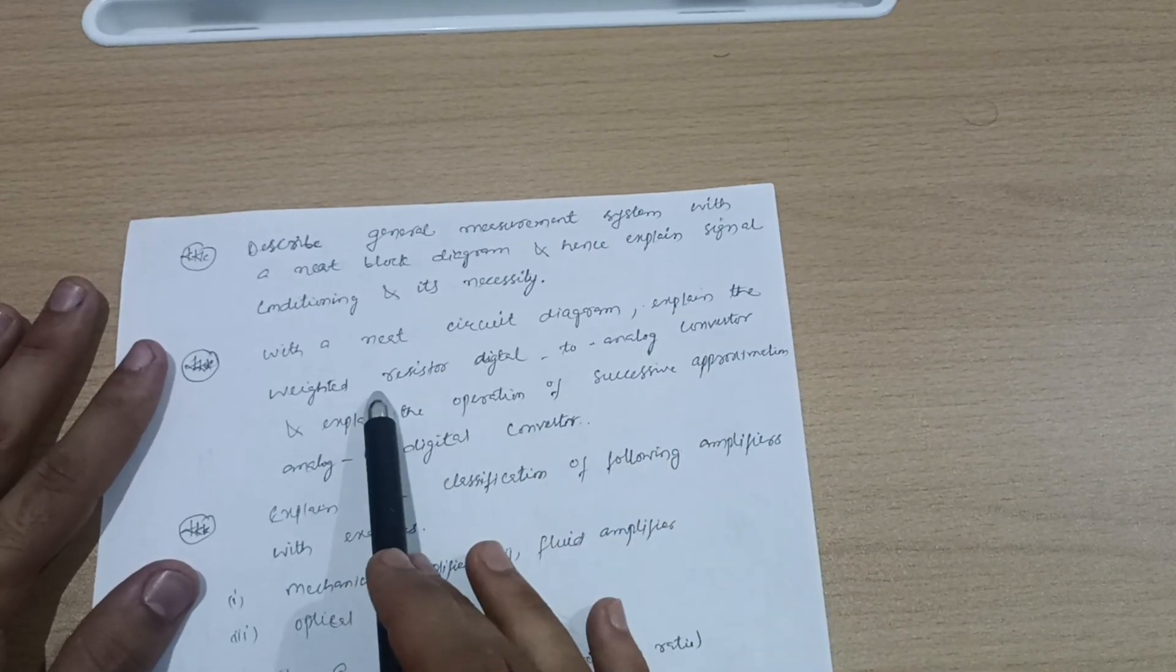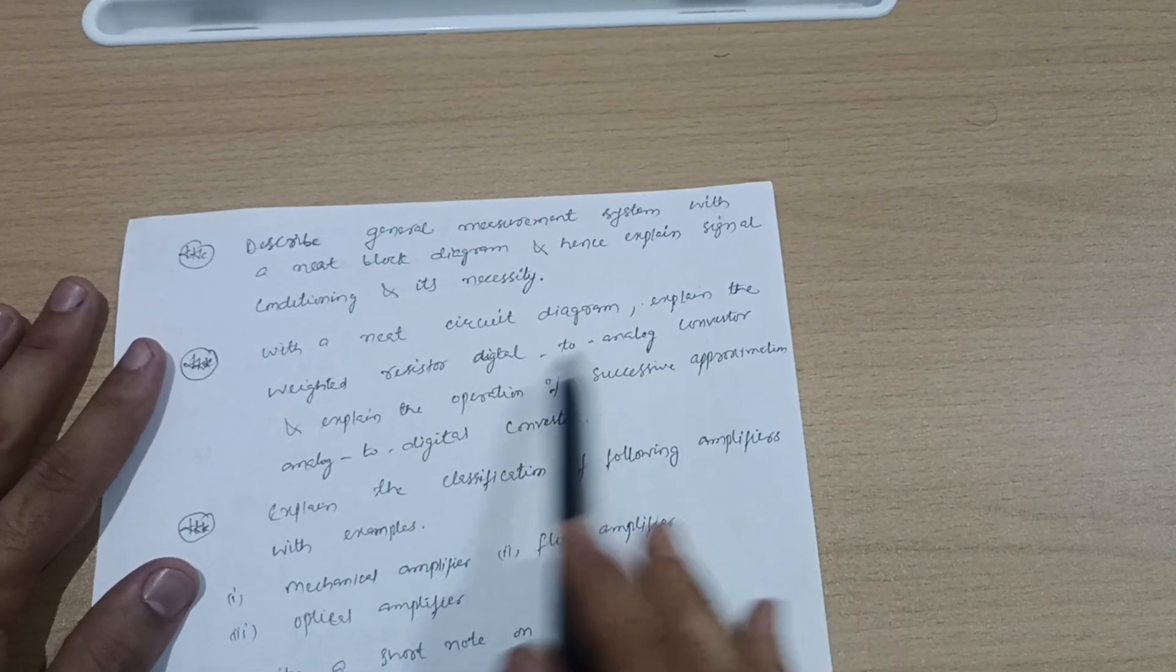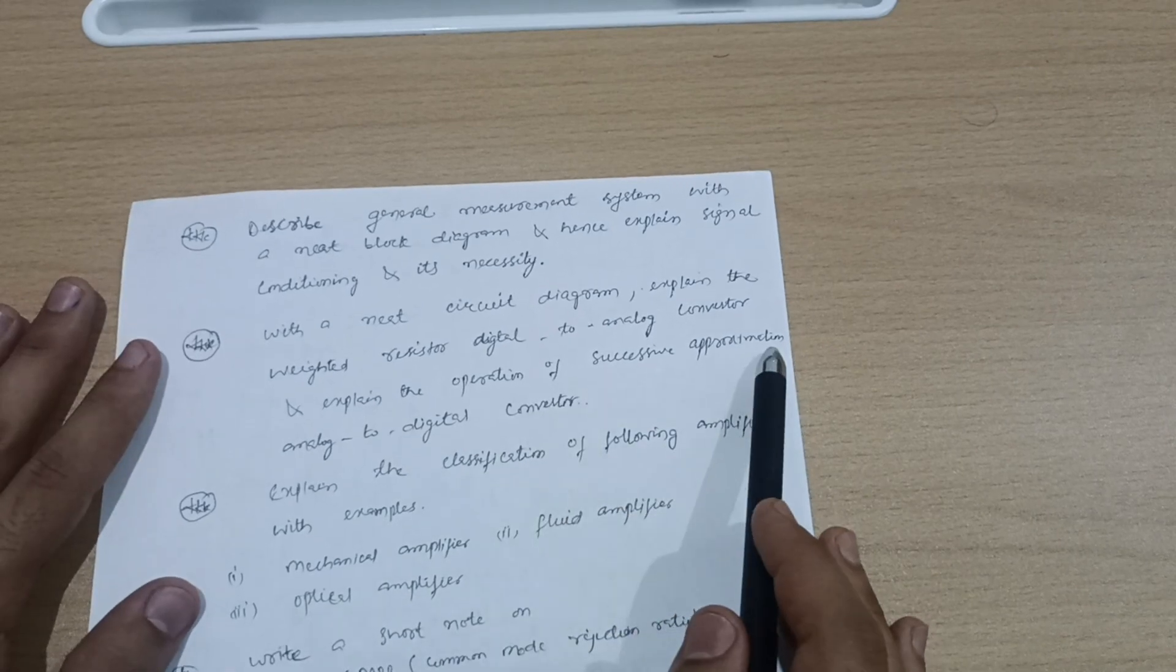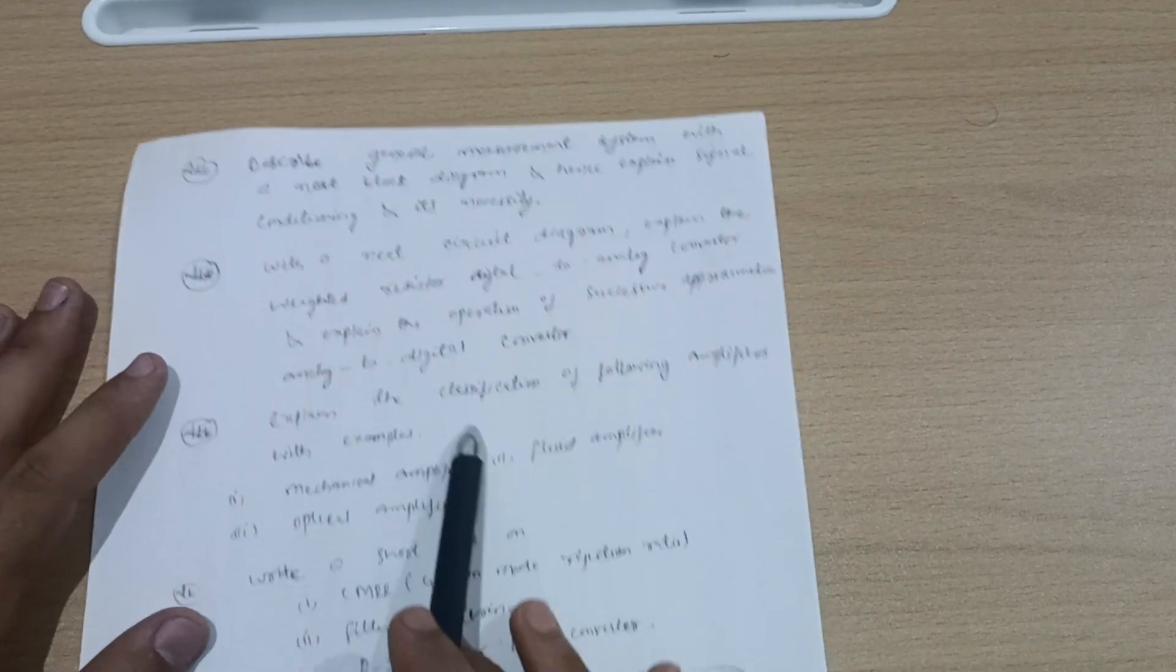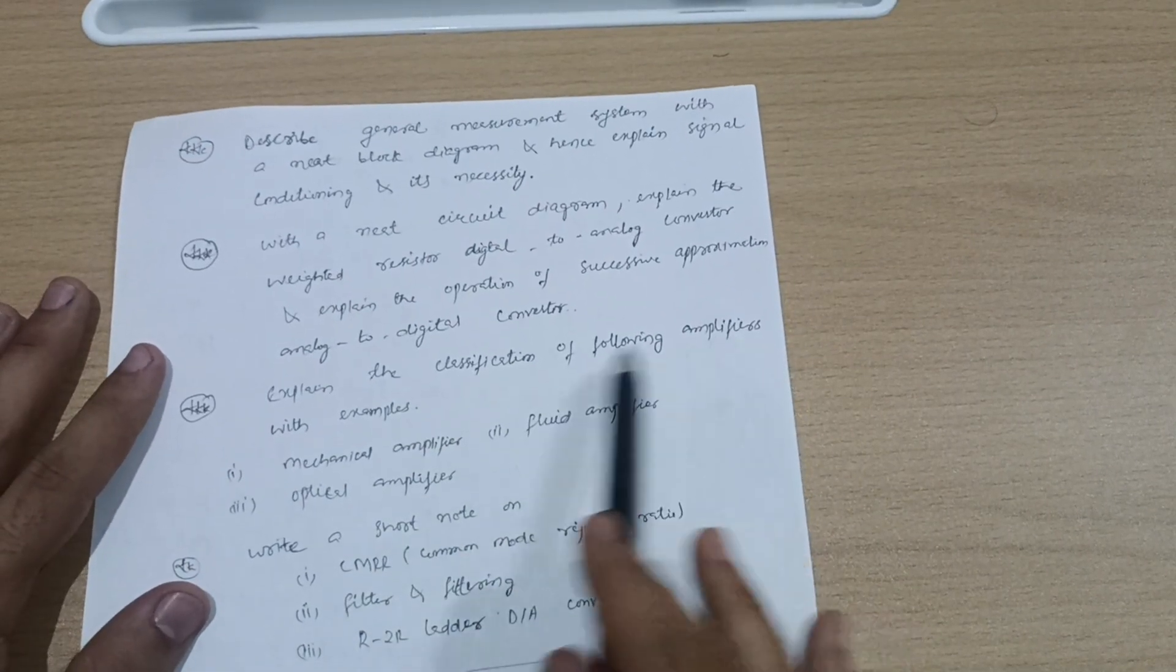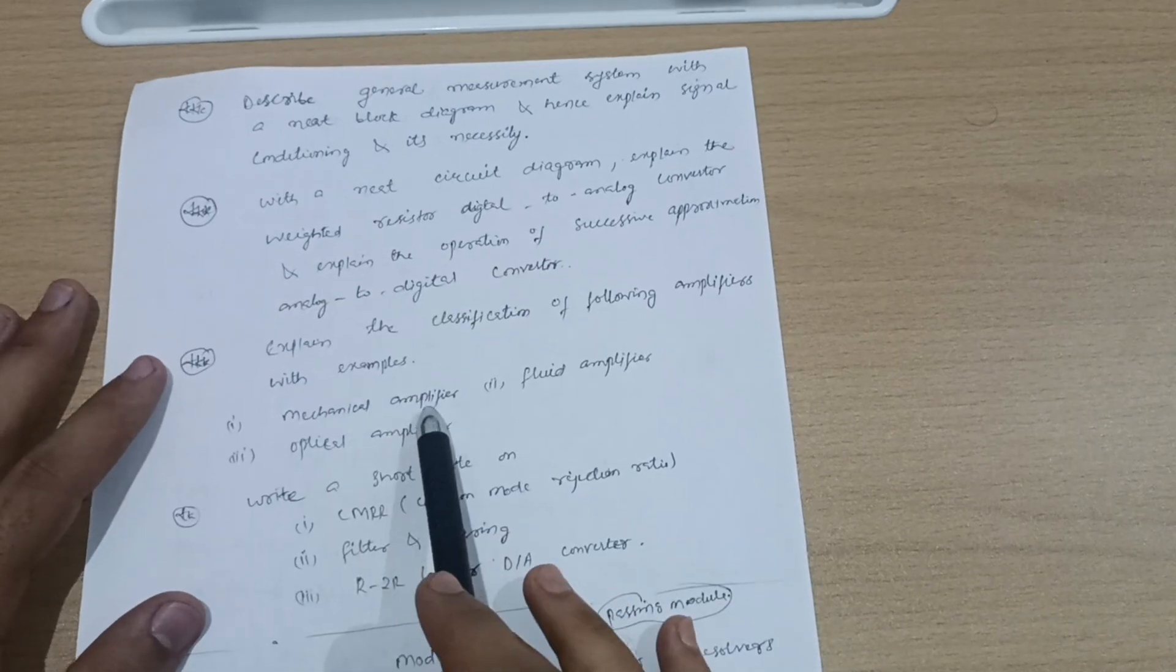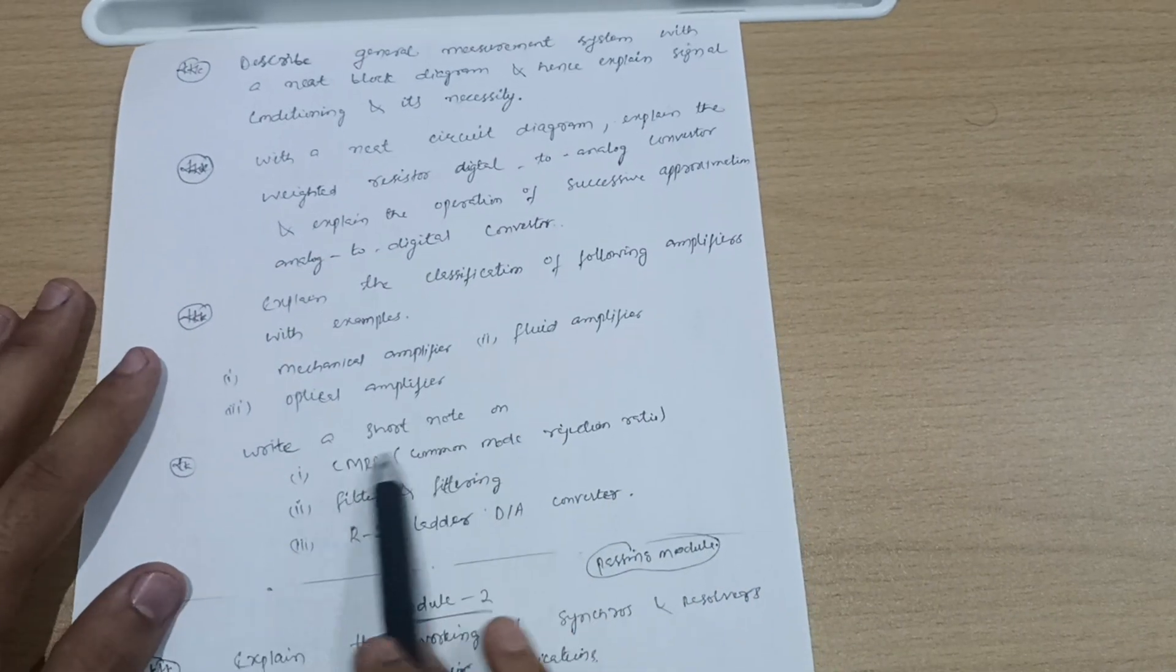With a neat circuit diagram explain the weighted resistor digital to analog converter and explain the operation of successive approximation analog to digital converter. Explain the classification of the following amplifiers with examples: mechanical amplifier, fluid amplifier, optical amplifier.